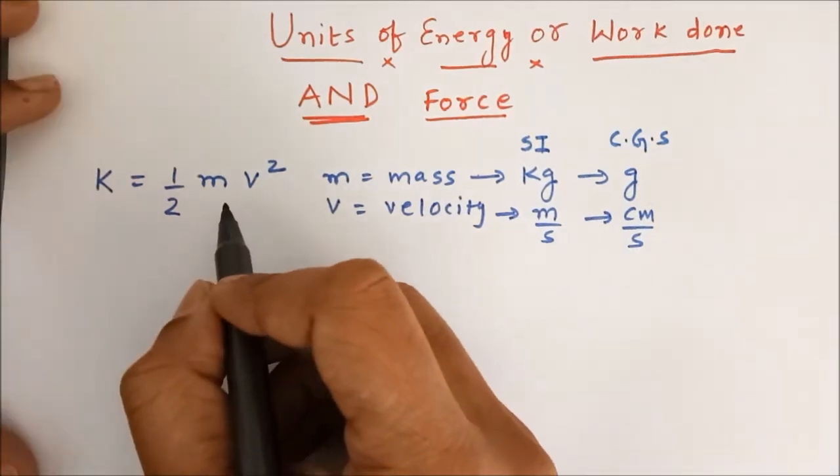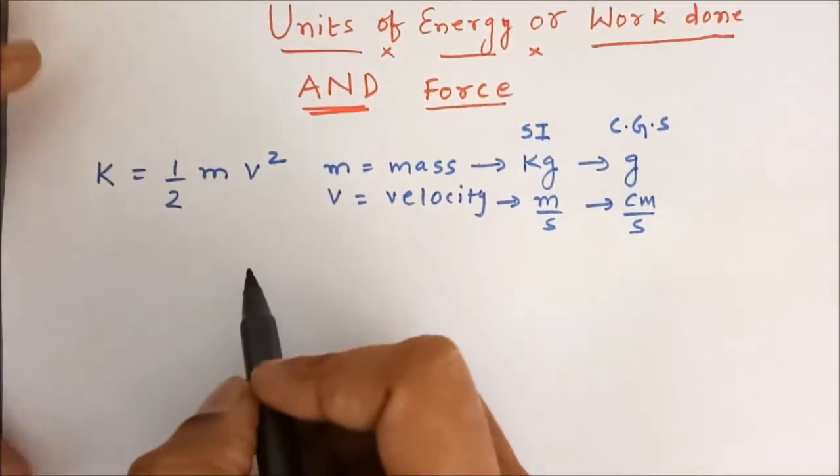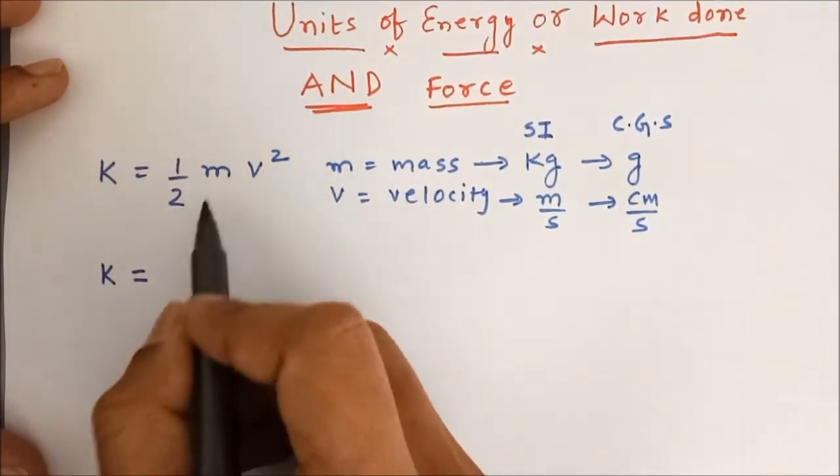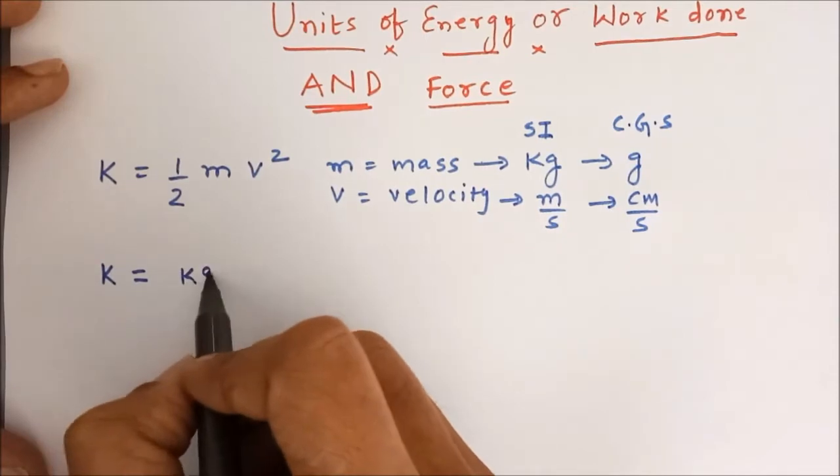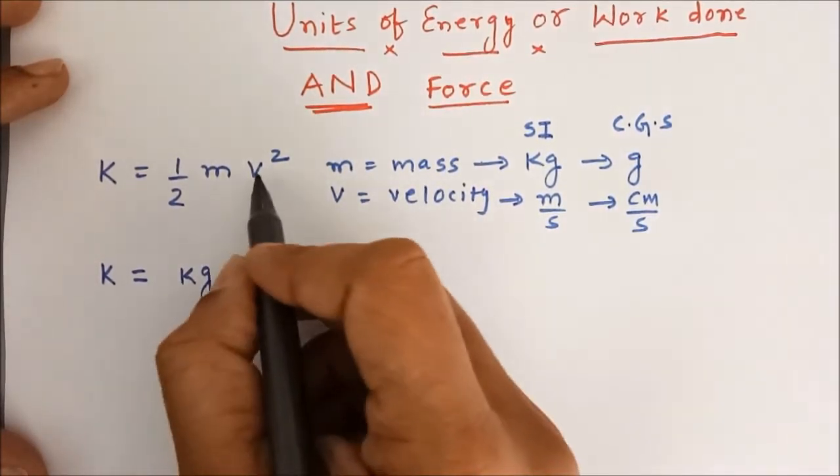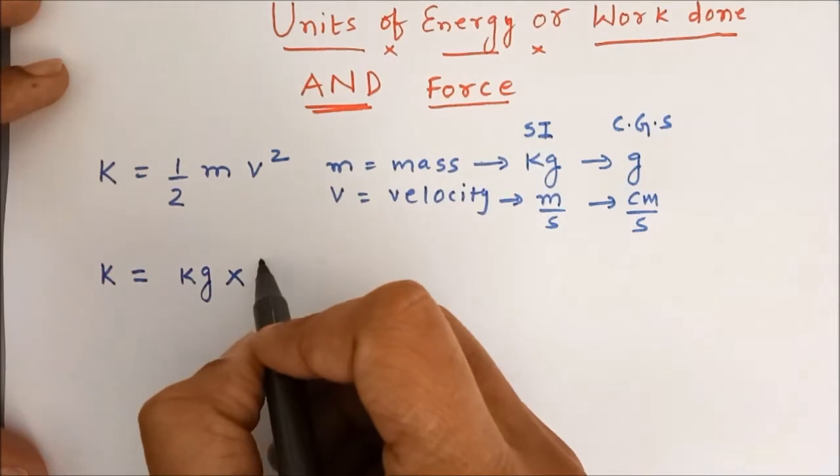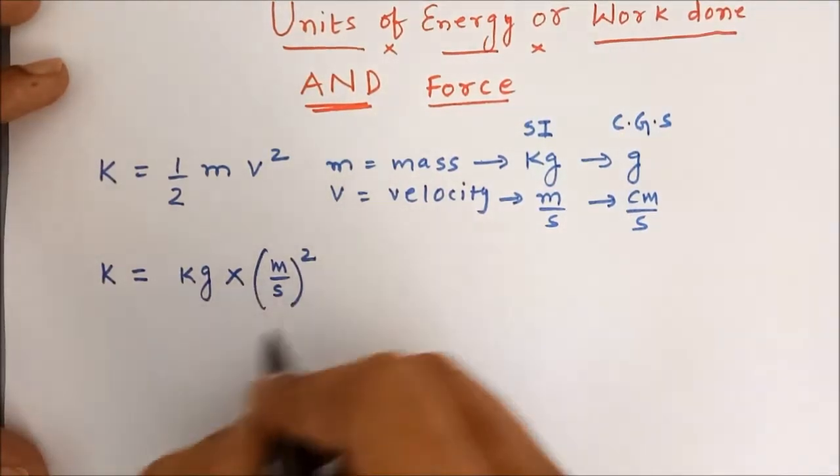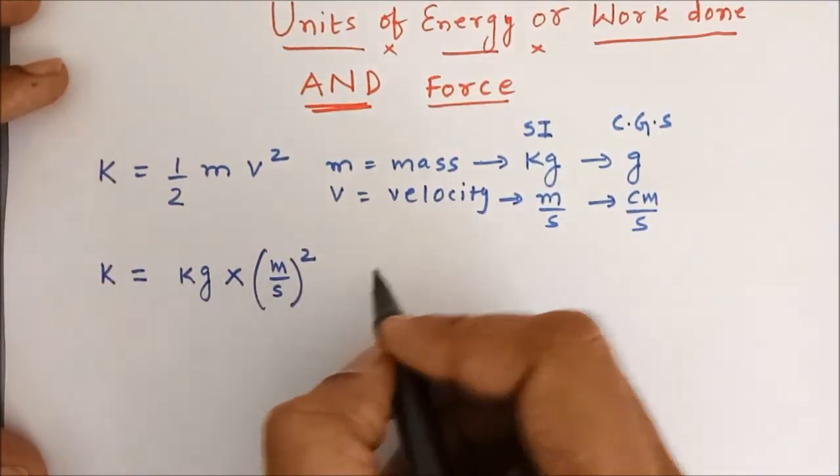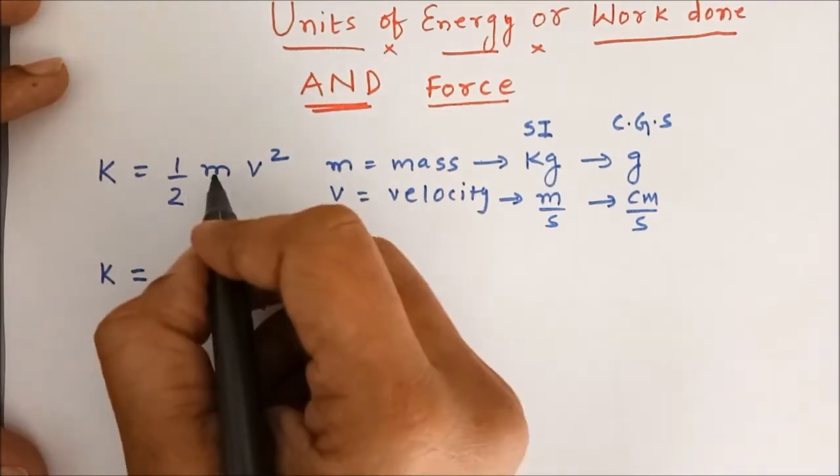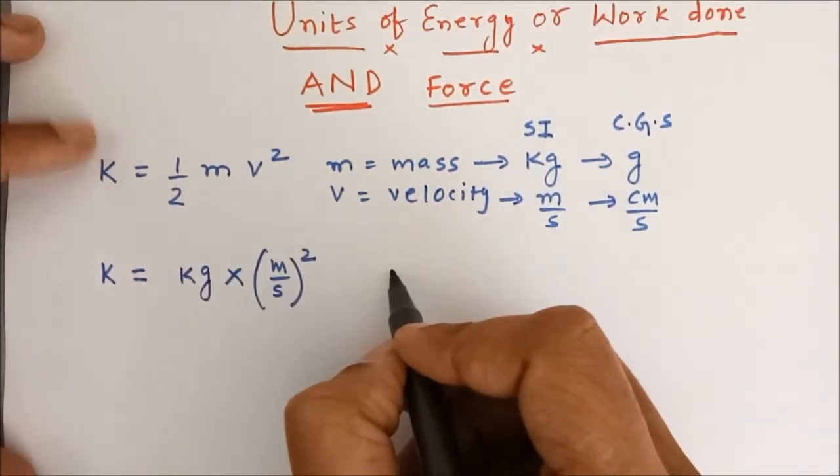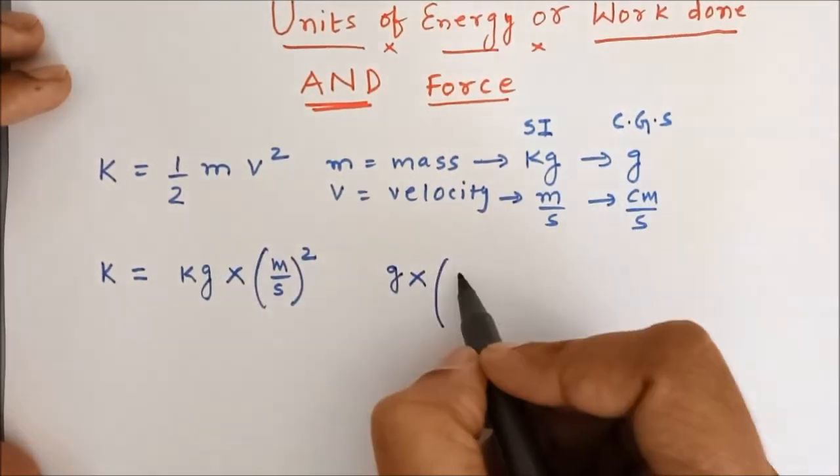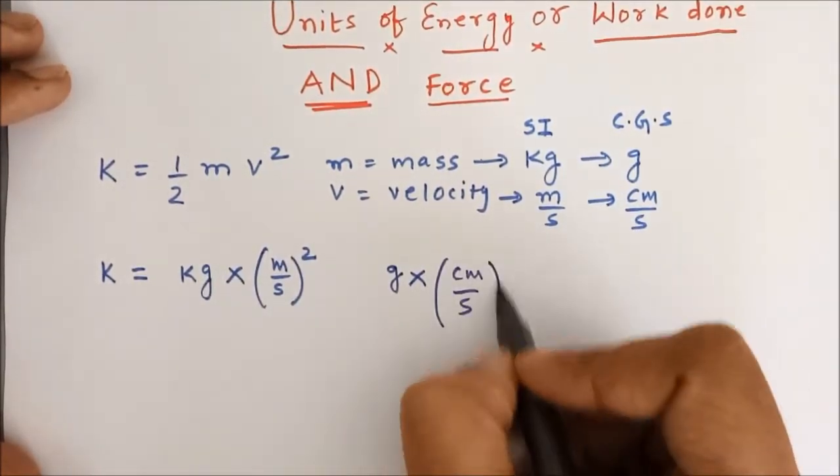Let us substitute it over here and find out the unit of kinetic energy. So, kinetic energy unit would be equal to half, it is a constant does not have any unit. Mass is kilogram in SI unit and in SI unit v is meter per second the whole square. If you want to find out the answer in CGS unit, you have to write down like this instead of m, you have to write down grams instead of v square, the CGS unit is centimeter per second the whole square.